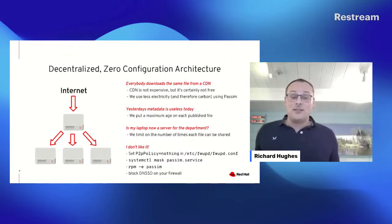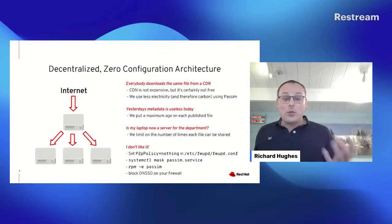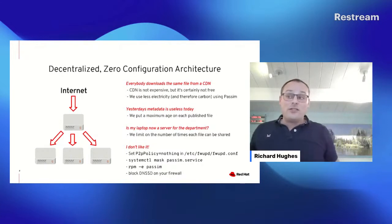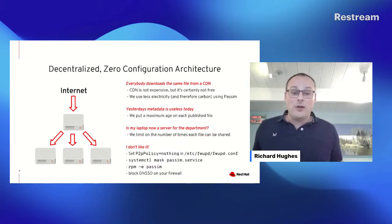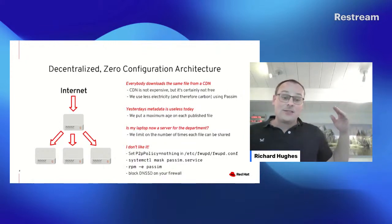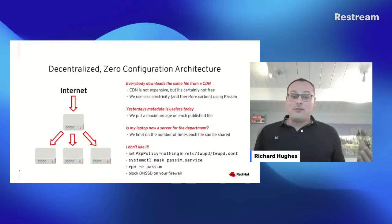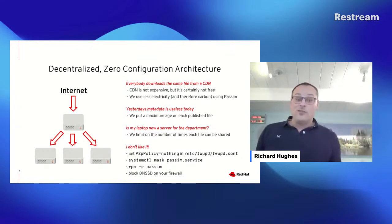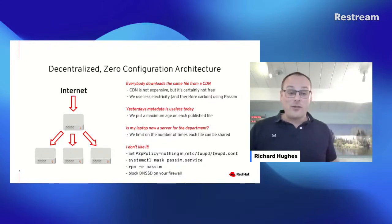We also want to use less electricity. It takes way more power to download something from the internet than from the computer next to your LAN. If you're on 5G as opposed to Wi-Fi, it uses two orders of magnitude more power to download. For a long time we've obsessed about how efficient things are because it makes batteries last longer. When you start talking about the giant scale of billions of people downloading something, you need to start thinking about carbon — one extra megabyte can increase your carbon usage by 50%. So it's kind of a big deal.